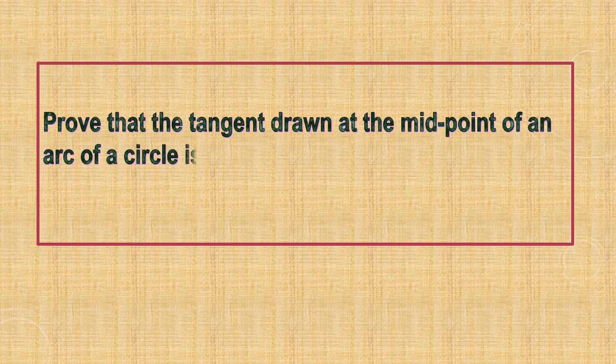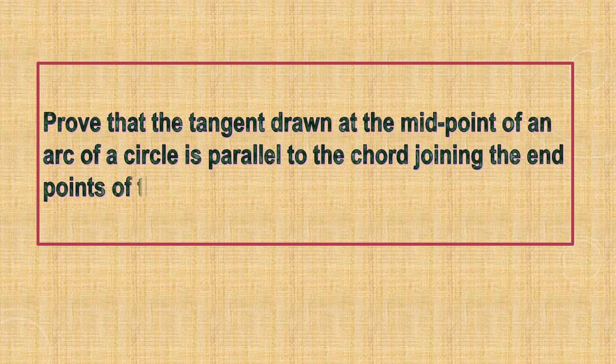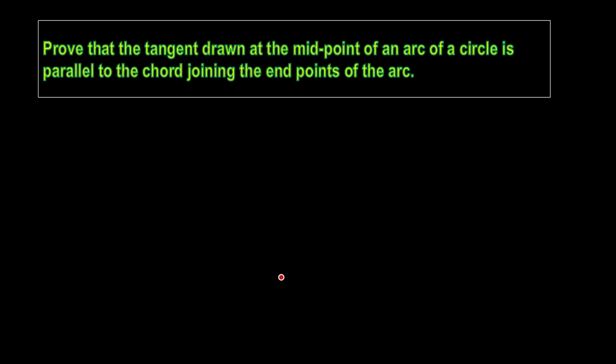Prove that the tangent drawn at the midpoint of an arc of a circle is parallel to the chord joining the endpoints of the arc. We have a circle with an arc, a tangent drawn at the midpoint of the arc, and a chord joining the endpoints of the arc. We have to prove that the tangent and the chord are parallel to each other.